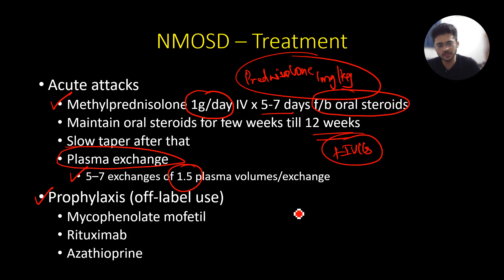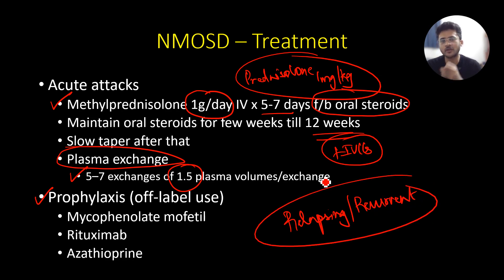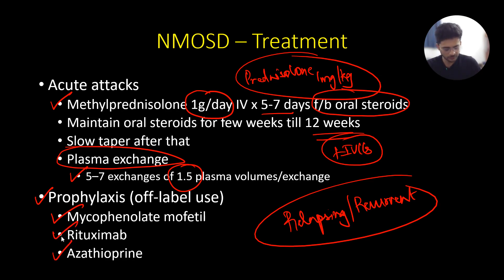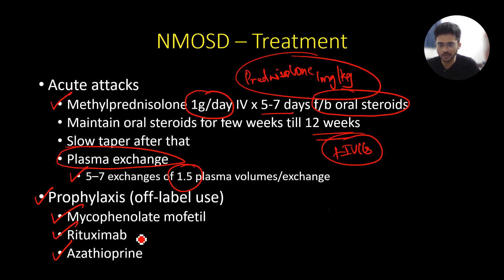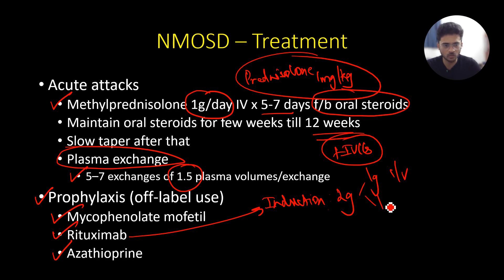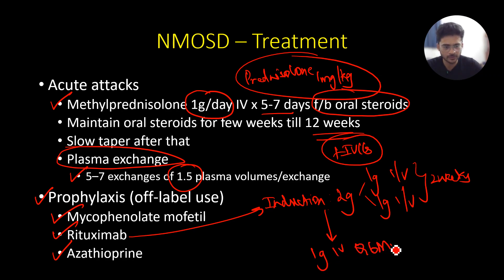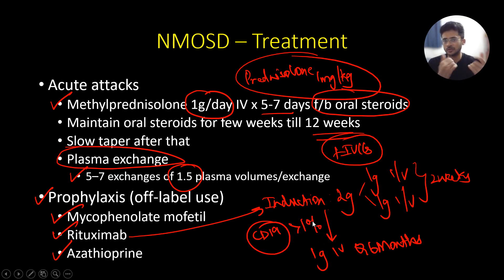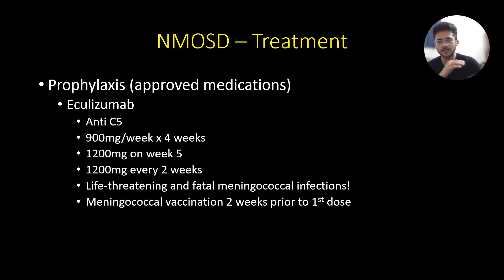For preventing further attacks, NMOSD is a relapsing illness so we must prevent further attacks. Off-label drugs include mycophenolate mofetil, rituximab, and azathioprine. Rituximab is most commonly used: induction with 1 gram IV, then another 1 gram 2 weeks later, followed by 1 gram IV every 6 months. Before each subsequent dose, check CD19 levels — only proceed if CD19 is more than 1%; if still suppressed, wait 2 to 3 months before re-dosing.